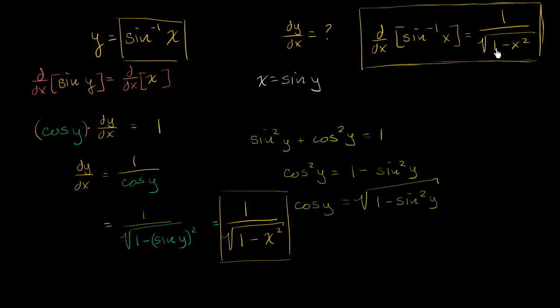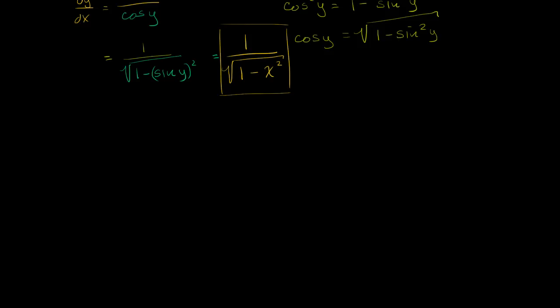What I encourage you to do in this video is to pause it and try to do the same type of proof for the derivative of the inverse cosine of x. So our goal here is to figure out the derivative with respect to x of the inverse cosine of x. What is this going to be equal to?